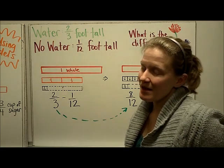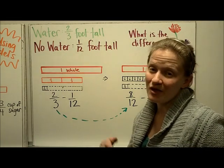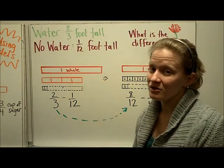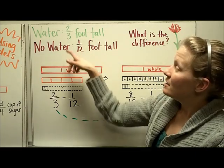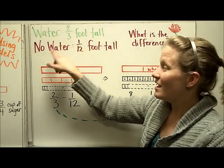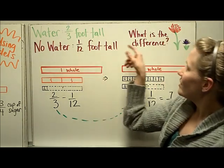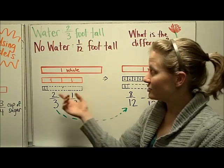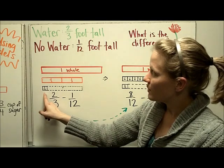If you did a science experiment where your independent variable was whether or not you gave water to a plant — you planted two plants, one got water and one didn't — the thing you measured, your dependent variable, was how tall they were. The plant with water grew to be two-thirds of a foot, and the plant without water grew to be one-twelfth of a foot tall. We're trying to figure out the difference between the growth of those two plants. We can model it with fraction towers, showing the two-thirds here and one-twelfth here.